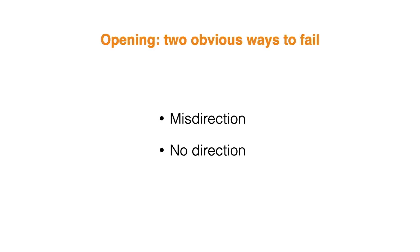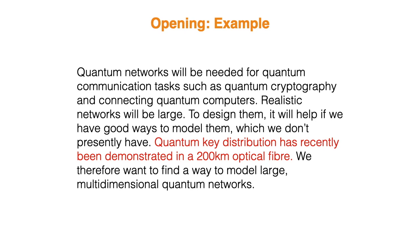When writing the opening, there are two obvious ways to fail. One is misdirection, and the other one is no direction at all. So let's look at this modified version of the example. Let's focus on this sentence in red. It might actually be true and important, but putting it in the opening will give people the impression that this paper is about quantum key distribution. If it is important but not what the paper is about, you can mention it in the right context later in the introduction. In his book on writing science, Joshua Schimmel refers to this as mental whiplash.